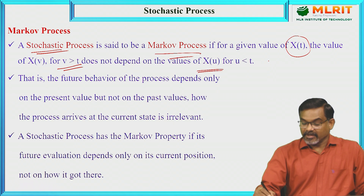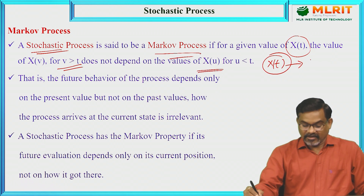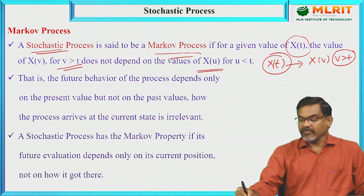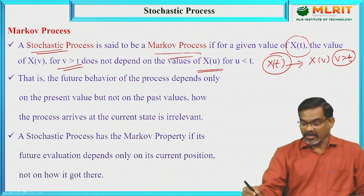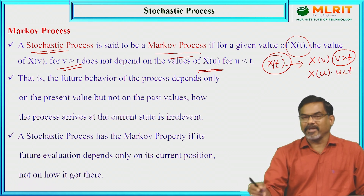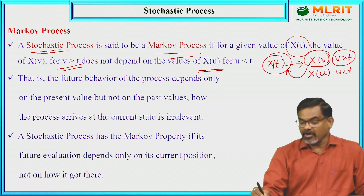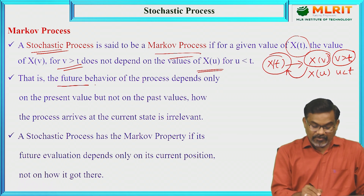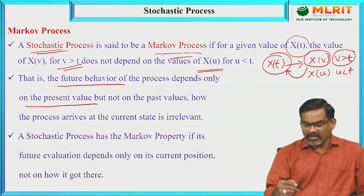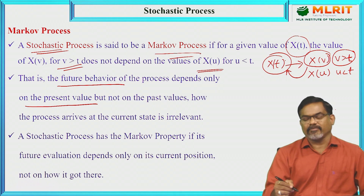What does it mean? The value of x(t) is the given present value. Then x(v), where v is greater than t, is the future value. This future value does not depend on x(u) where u is less than t — that means the previous values. So the value of x(v) depends only on x(t), but not on any prior values of t.